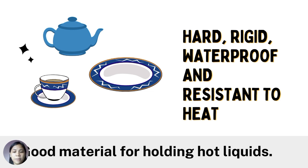Now let's observe teapot, plates, cups, and saucers. What characteristics do they share in common? If you say they are made up of ceramics, you are right. Its property shows that it is hard, rigid, waterproof, and resistant to heat. These properties make them a good material for holding hot liquids.